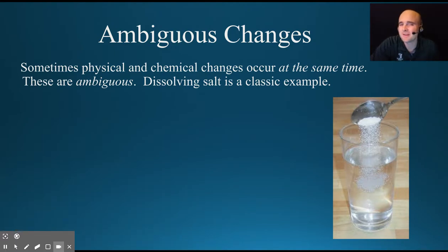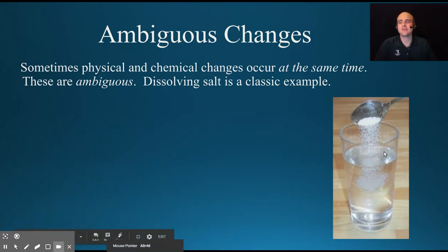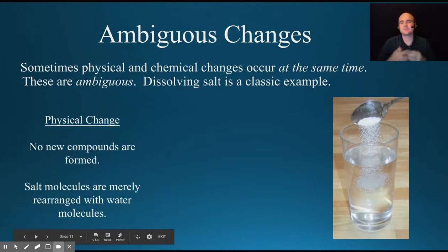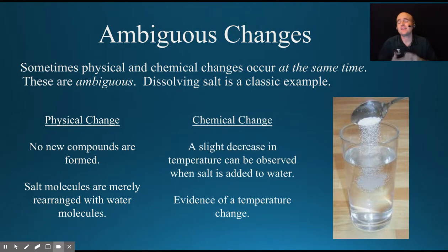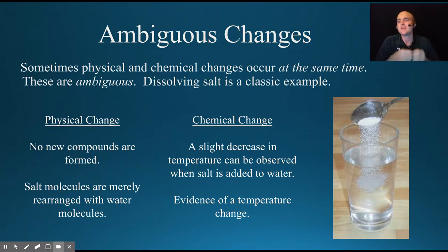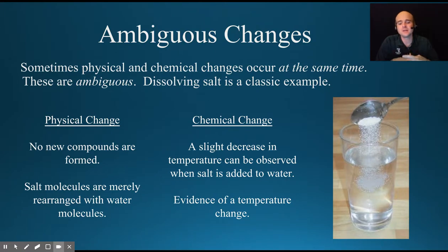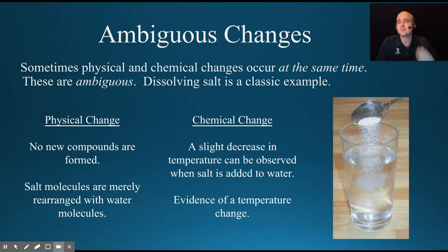A bonus word to understand is the ambiguous change. Sometimes you can see a physical and chemical change happen at the same time. The classic example is salt being dissolved in water. It is a physical change because no new compounds are being formed — you are just mixing the salt and the water. But it is a chemical change as well because there will always be a slight decrease in temperature. Almost every time you dissolve anything you will get a decrease in temperature. For example, when you dissolve sugar in your tea, you are actually decreasing the temperature of your tea — just a little bit, not enough to really feel or notice, but you are decreasing the temperature.